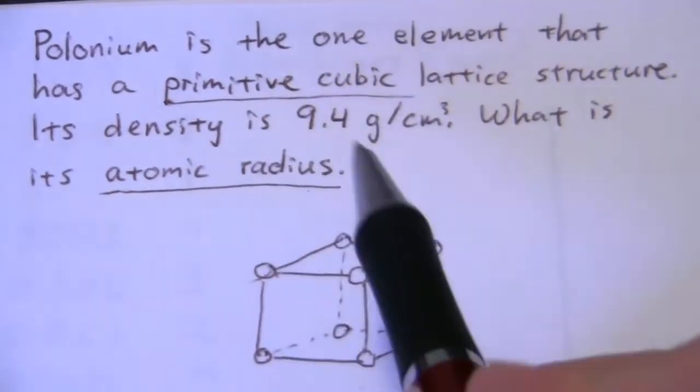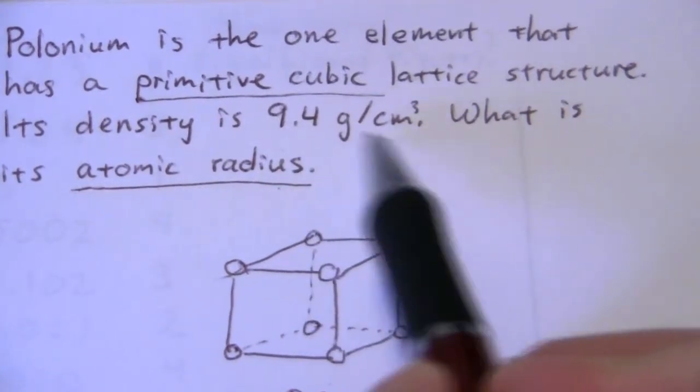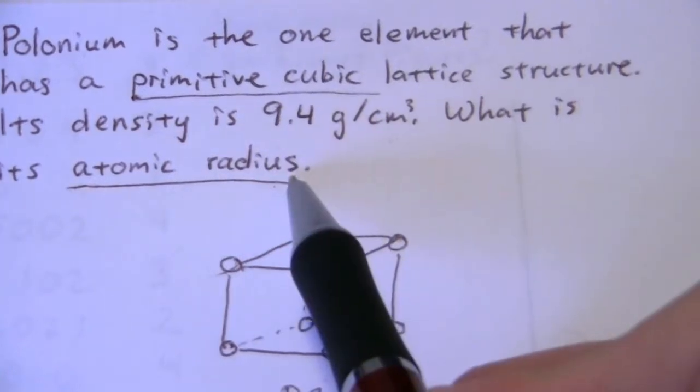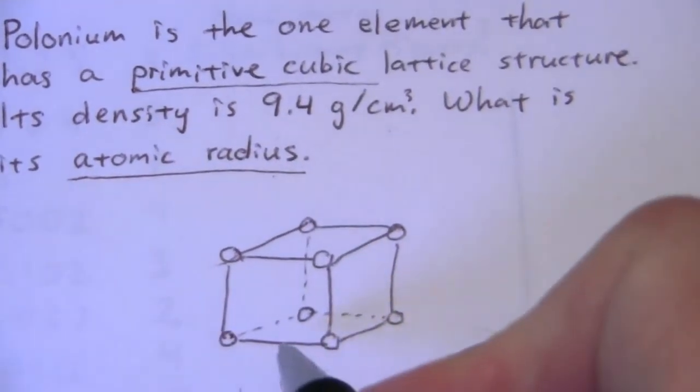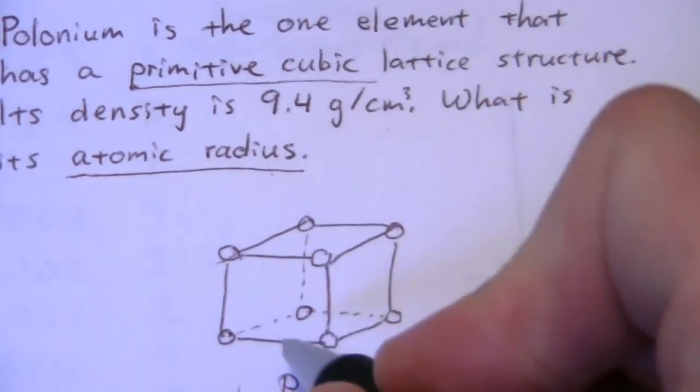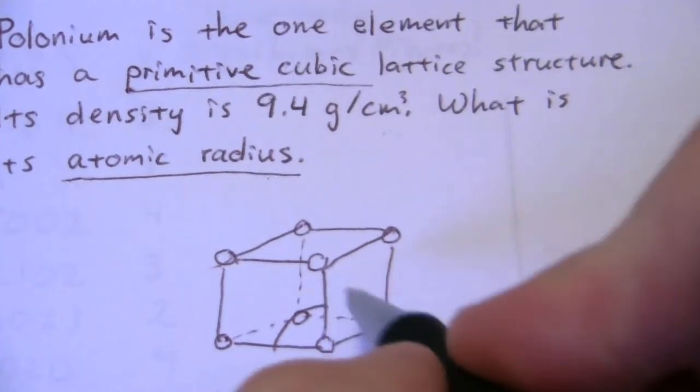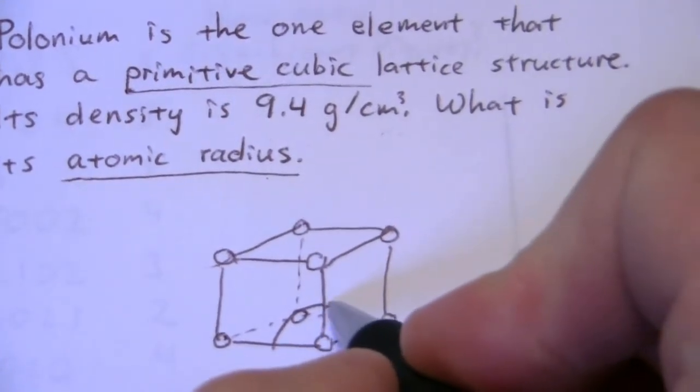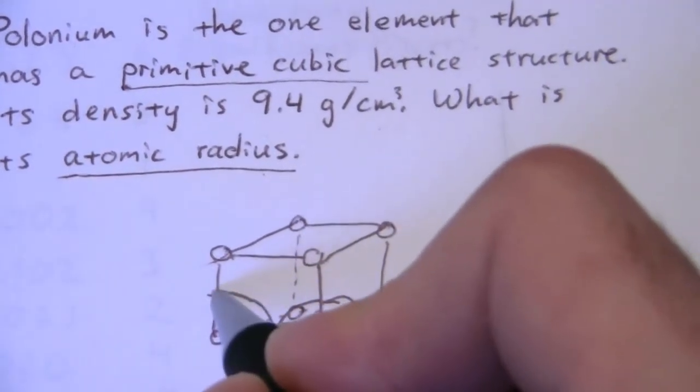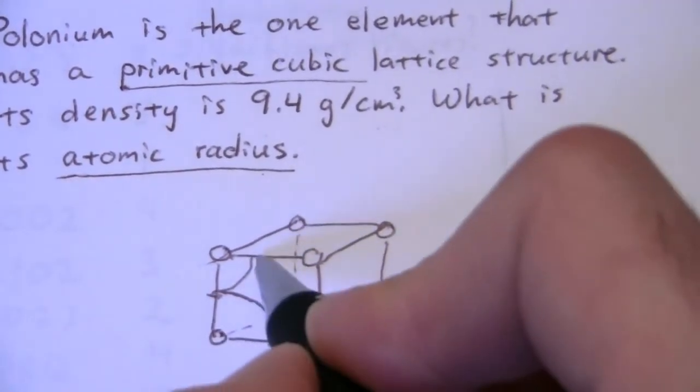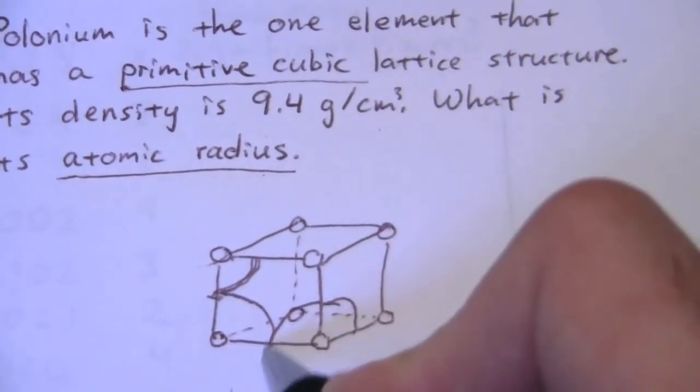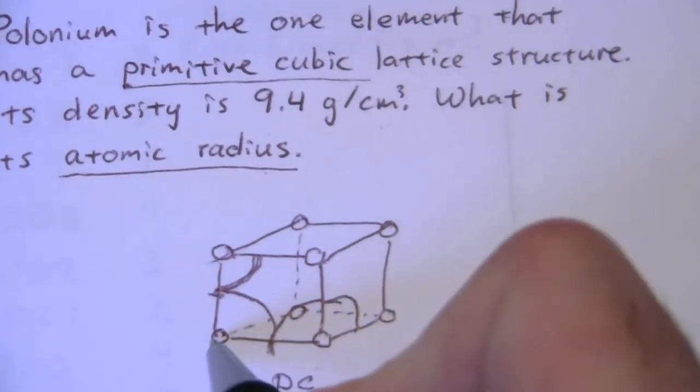So now we're looking at this density. What does the density give us that we can find the radius from? So if we look at these atoms, I'm showing them as though there's a lot of space here between them. But in reality, if we look at this, it would look more like this, where the radius of each of these atoms comes right into the center of the cube.